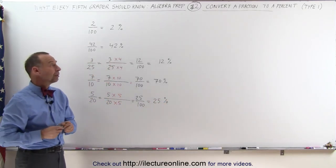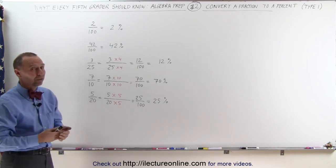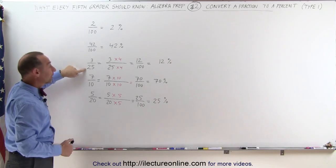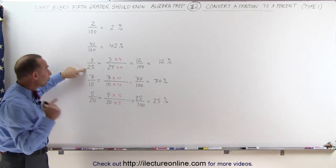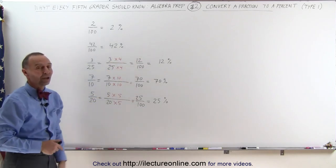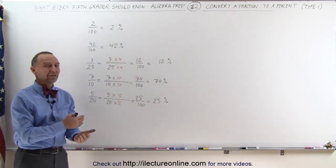So that's the first type of conversion from a fraction to a percent. If the denominator is 100, it's very easy. If it's not 100, but it can be very easily turned into a fraction whose denominator is 100, then it's still relatively easy, and that's how it's done.